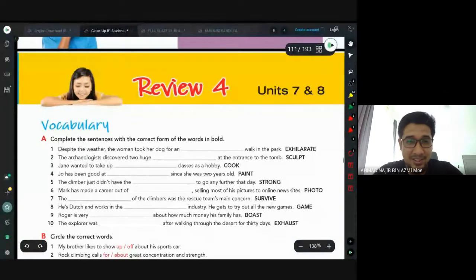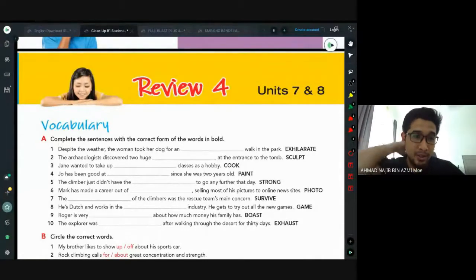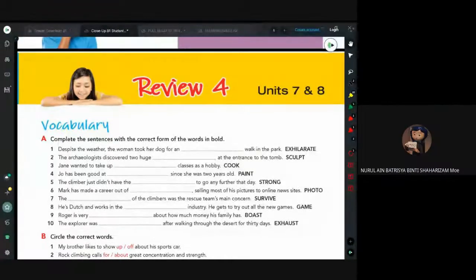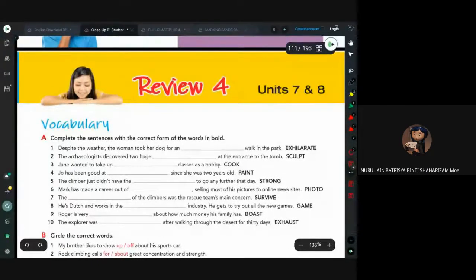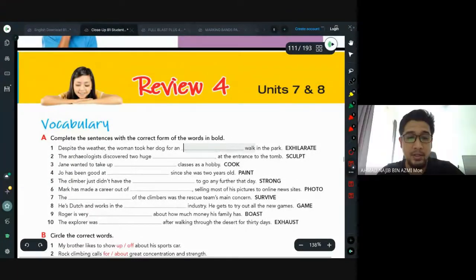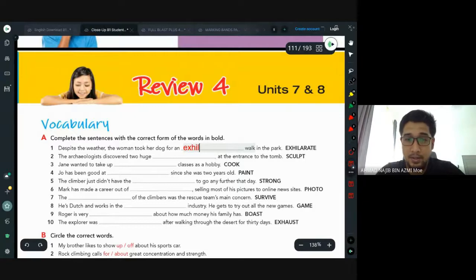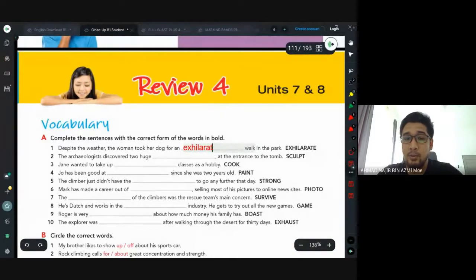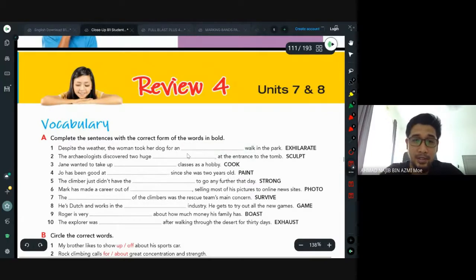Okay, so we'll start with vocabulary first. Ain, can you share the answers for A? Despite the weather, the woman took her dog for an exhilarate walk. We want to change this word into an adjective, and how we do that is you add -ing: exhilarating.